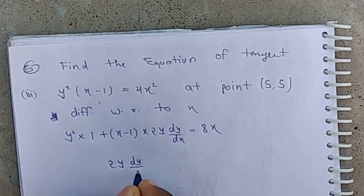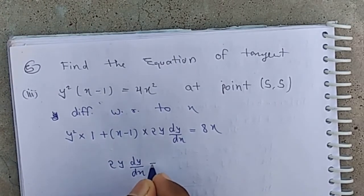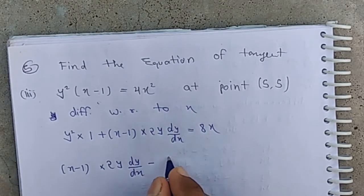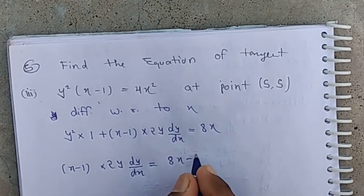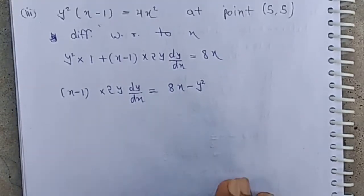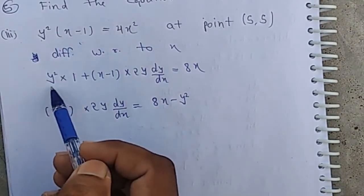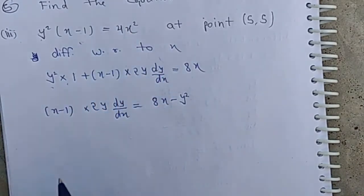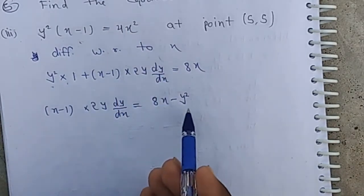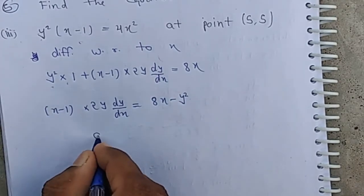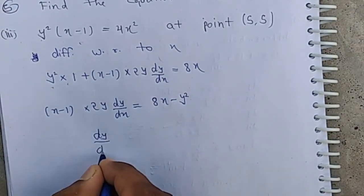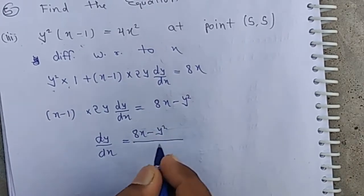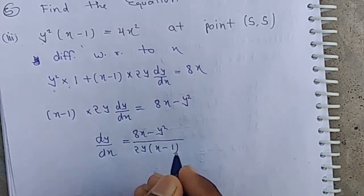Rearranging: 2y·(dy/dx)·(x−1) = 8x − y². Therefore dy/dx = (8x − y²) / (2y(x−1)).